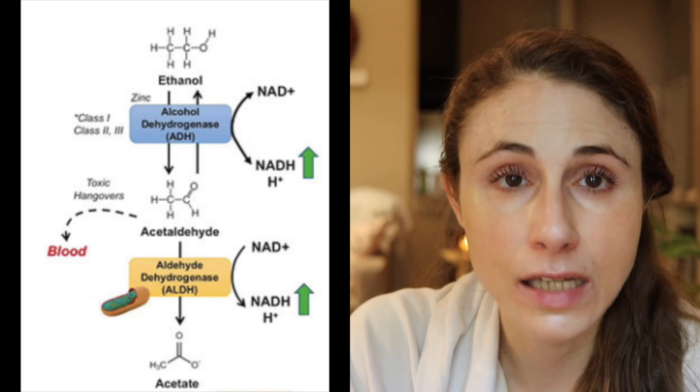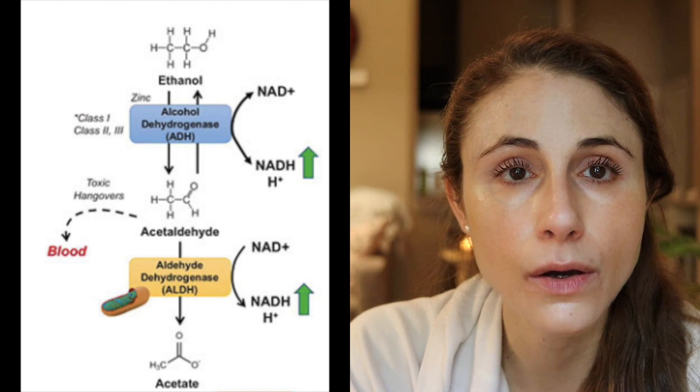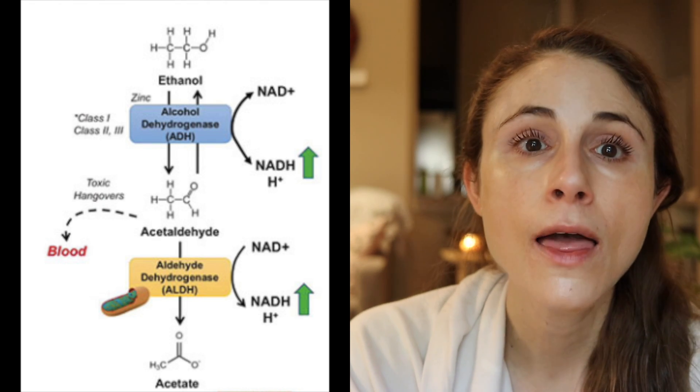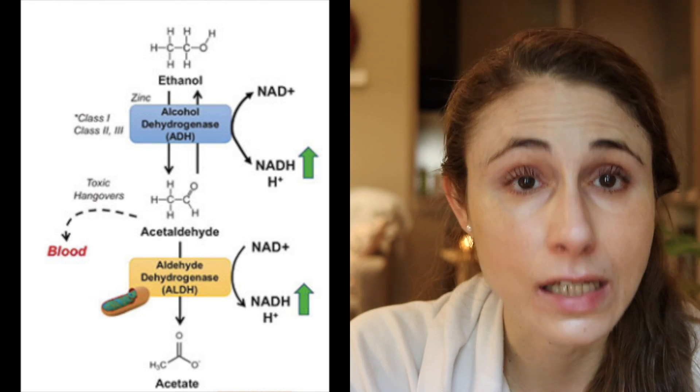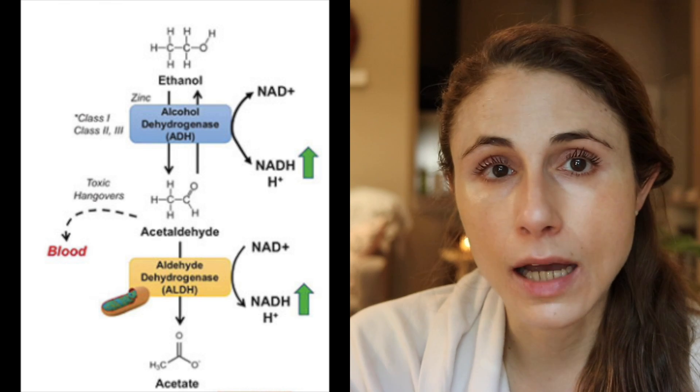We only know so much about this — there's a lot more to learn. For example, people of Asian descent have less activity of the enzyme that converts acetaldehyde to a less reactive form, so they have more acetaldehyde buildup when they consume alcohol. That's why they often experience redness with consuming just a few sips. Their genetics are different, and therefore they are likely more at risk for some of the negative consequences of alcohol, even with modest consumption.